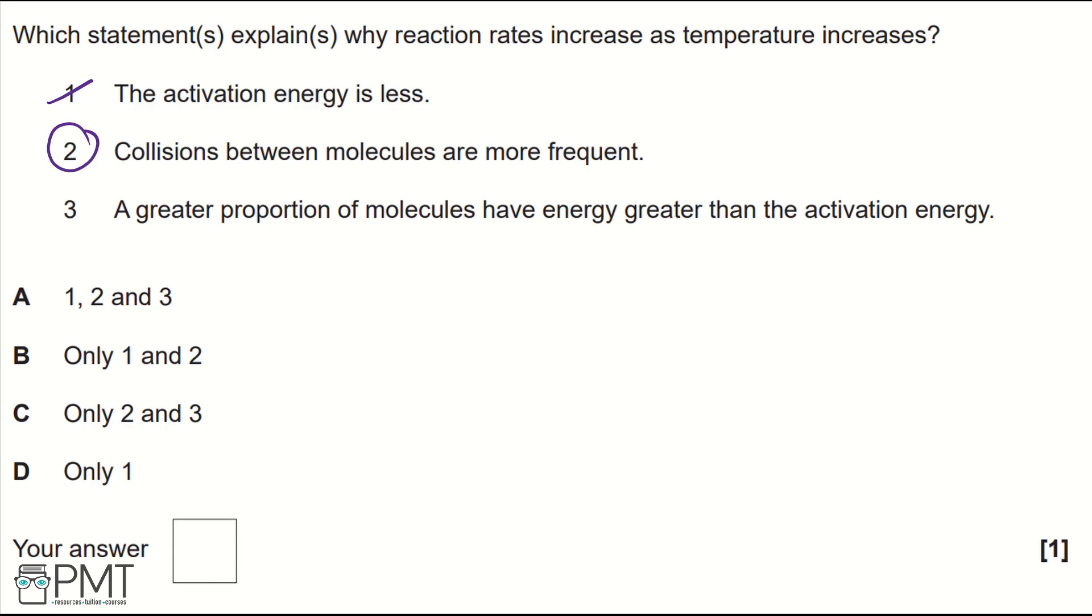2. And then 3. Greater proportion of molecules have energy greater than activation energy. Well, if they have more kinetic energy and more temperature, so thermal energy, that's going to increase the energy that the molecules have. And therefore, they are going to have an energy greater than the activation energy. So, the reaction is more fruitful or more successful because more molecules or a greater proportion of molecules have an energy greater than activation energy. So, 3 is also correct.